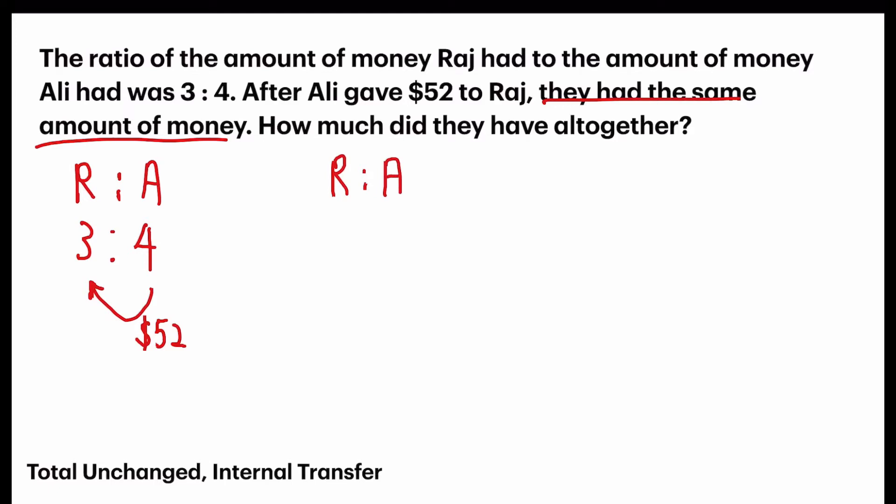the question only gave us 1. So, what is the second ratio? Since they had the same amount of money, I can say that the ratio is 1 is to 1. It's equal. Because they had the same amount of money. So, this is an internal transfer of $52 from one person to another person in the same story. So, which means the total should be unchanged. I've written down the concept at the bottom to remind you. What does it mean total unchanged?